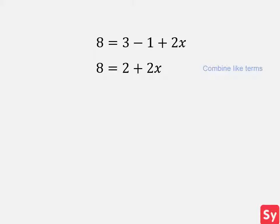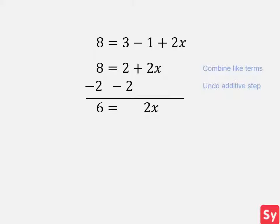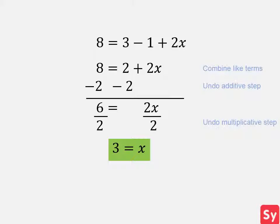Now we want to undo the additive step. We see that 2 is added to 2x, so we undo it by subtracting 2 from each side. We add down and we get 6 equals 2x. Next, we want to undo the multiplicative step. We see x is multiplied by 2, so to undo this, we divide both sides of the equation by 2. The equation becomes 3 equals x, which is our answer.